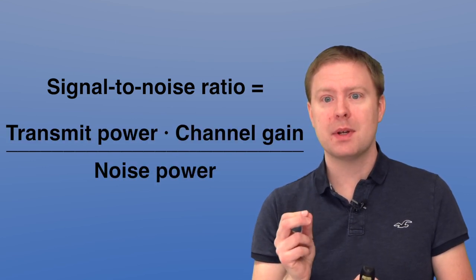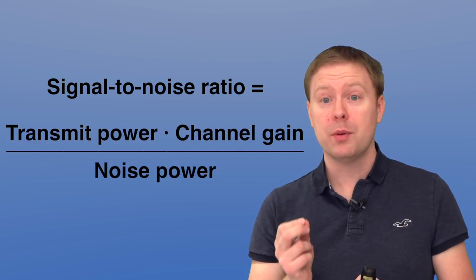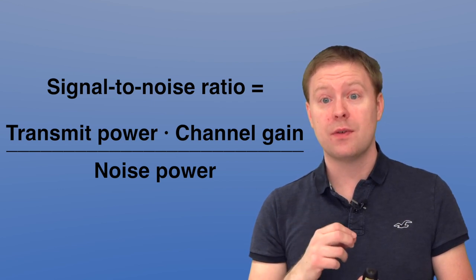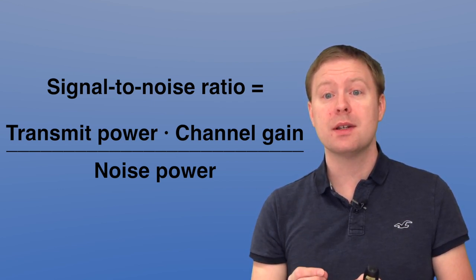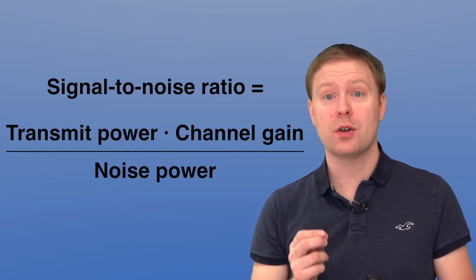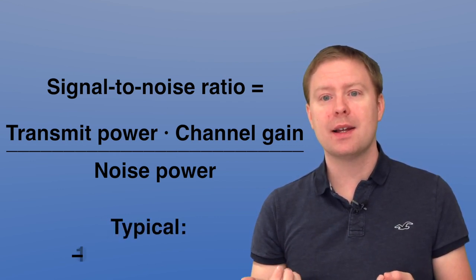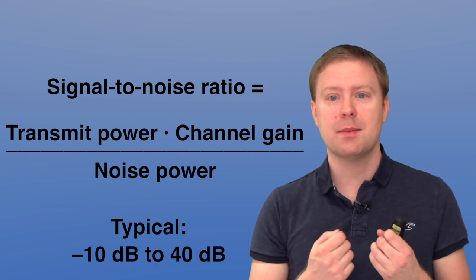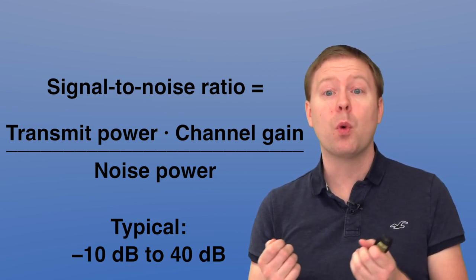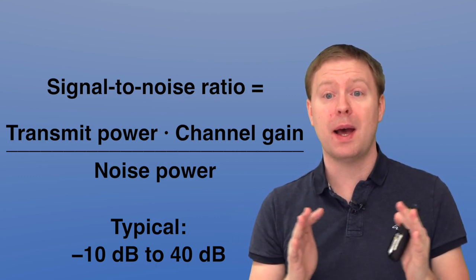In summary, the signal to noise ratio is the transmitted power multiplied with the channel gain, which is a very small number, divided with the noise power, which is also a very small number. The result is something that in real systems might lie somewhere between minus 10 dB and say 40 dB. So there's a large span of practical values for the signal to noise ratio.